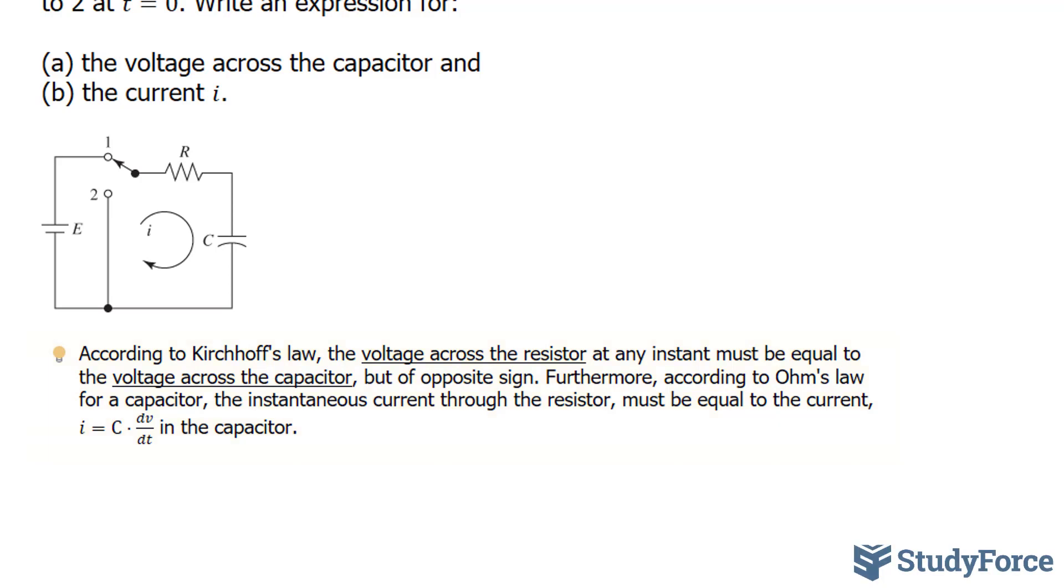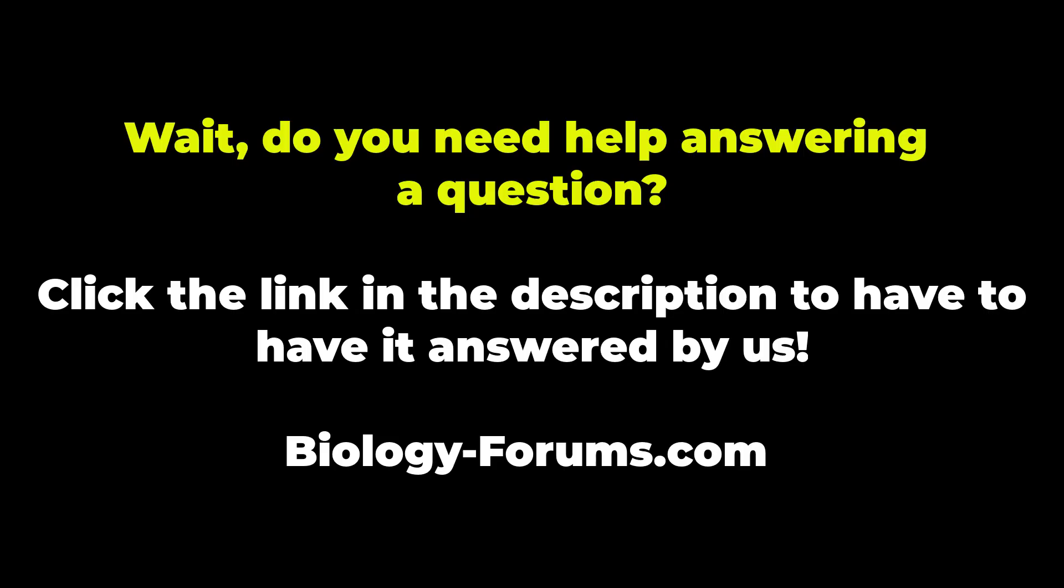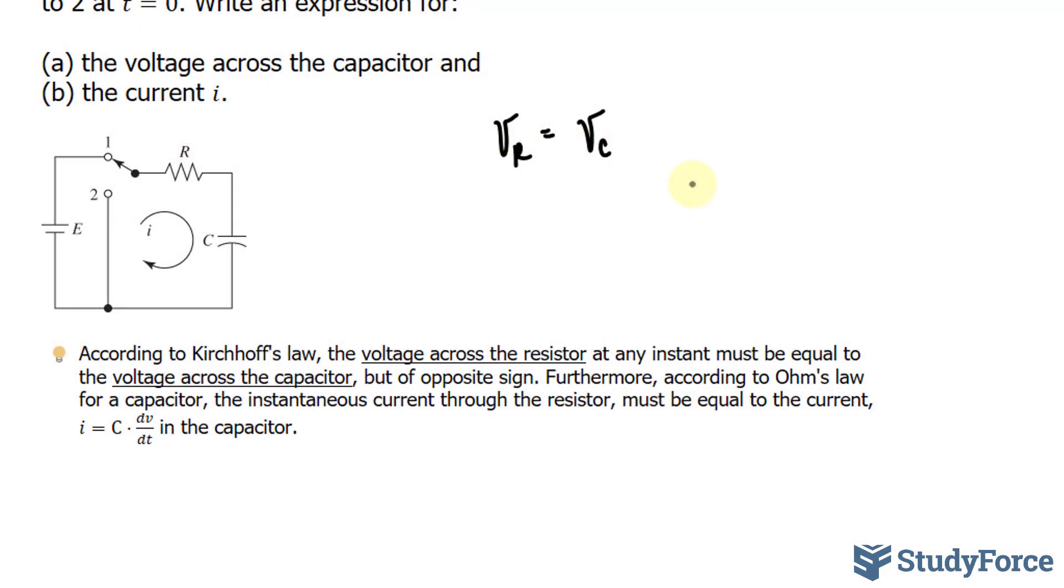So let's write that down. The voltage across the resistor, the voltage here, must be equal to the voltage across the capacitor, which I'll represent as VC. And they must be opposite signs, so you can put the negative on either of these terms. I'll just place it right here.